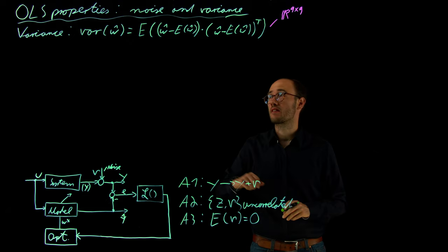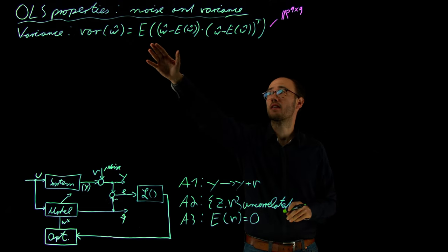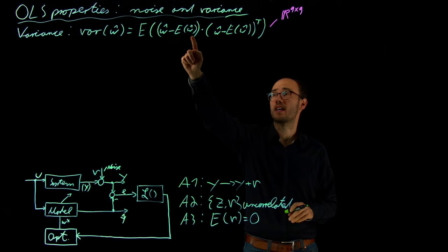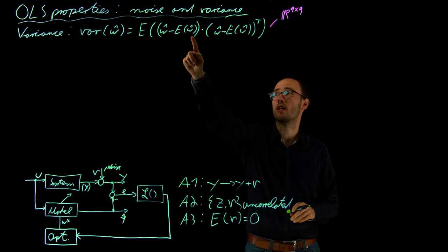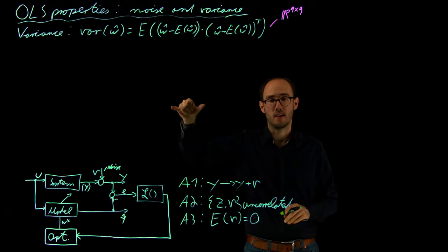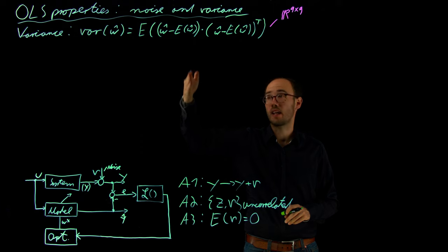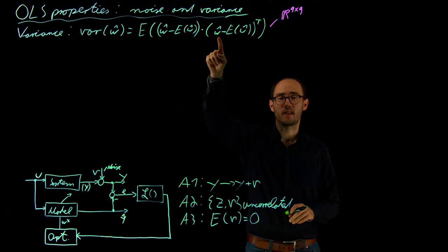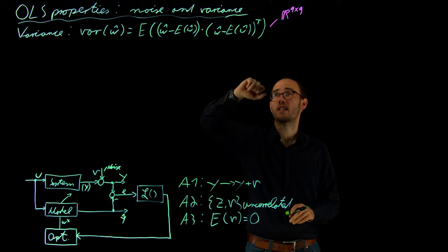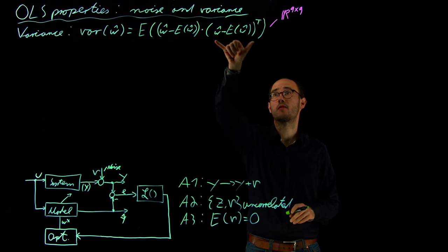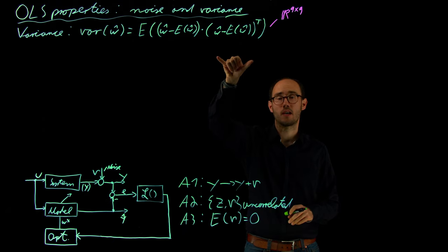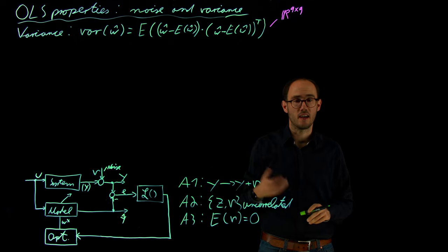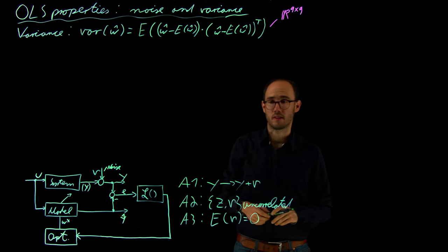The variance is defined as the expectation of w_hat minus the expectation of w_hat — which is a column vector — multiplied with w_hat minus the expectation of w_hat transpose, which is a row vector. This is why the result is a q times q matrix.